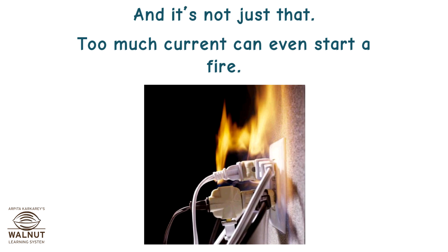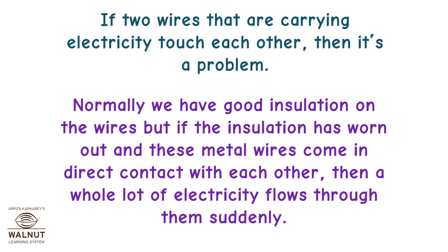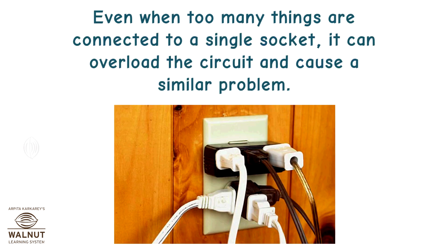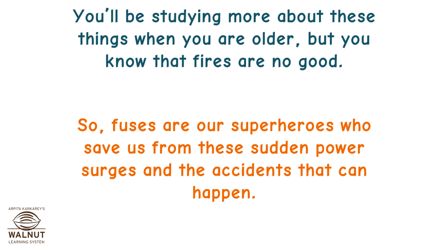It's not just that — too much current can even start a fire. If two wires that are carrying electricity touch each other, it's a problem. Normally, we have good insulation on the wires. But if the insulation has worn out and these metal wires come in direct contact with each other, a whole lot of electricity flows through them suddenly. That heats them up a lot. This is called a short circuit. Sparks fly and it can cause a fire. Even when too many things are connected to a single socket, it can overload the circuit and cause a similar problem. Fuses are our superheroes who save us from these sudden power surges and the accidents that can happen.